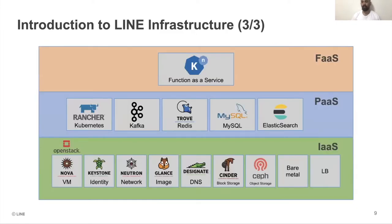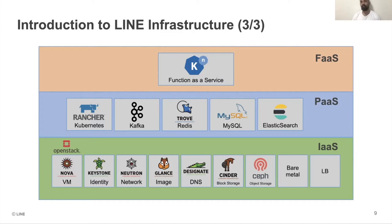For the high-level architecture, Line's architecture is divided into three parts. The first is the infrastructure service layer — the base layer — which consists of OpenStack components like Neutron, Nova, Glance, Ceph, and also includes load balancer and other bare-metal components. We also have a Platform as a Service layer which includes Rancher, Kafka, Trove, Elasticsearch, and MySQL. On top we have an in-house Function as a Service layer which runs Kubernetes and allows serverless computing.